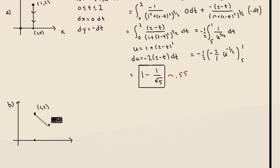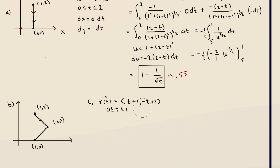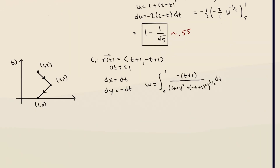Now let's use a zigzag path — a different path like in our ramp example. Experiment tells us we should get the same answer as the straight-line path. I'll use the additivity of line integrals and break this path up into two pieces. Here I'm computing c1, just the first part of the path.